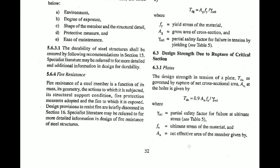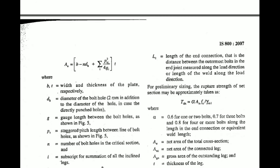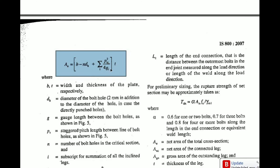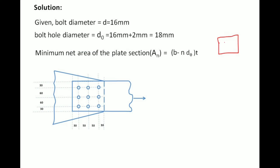We already know that An is the net effective area of the member. You will find the formula in clause number — page 33. The net effective area is An = (b − n·dh) × t, where the summation term applies to staggered connections. In our question, since we have a simple connection with no staggered bolts, the staggered term is zero.